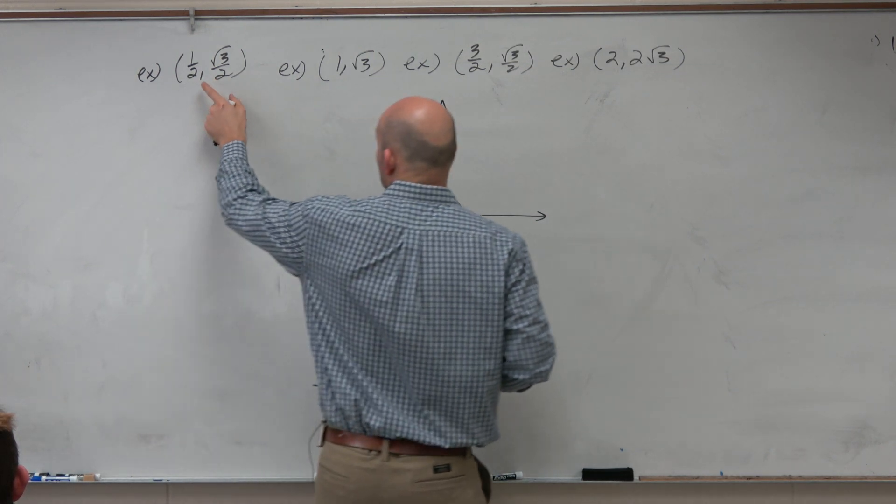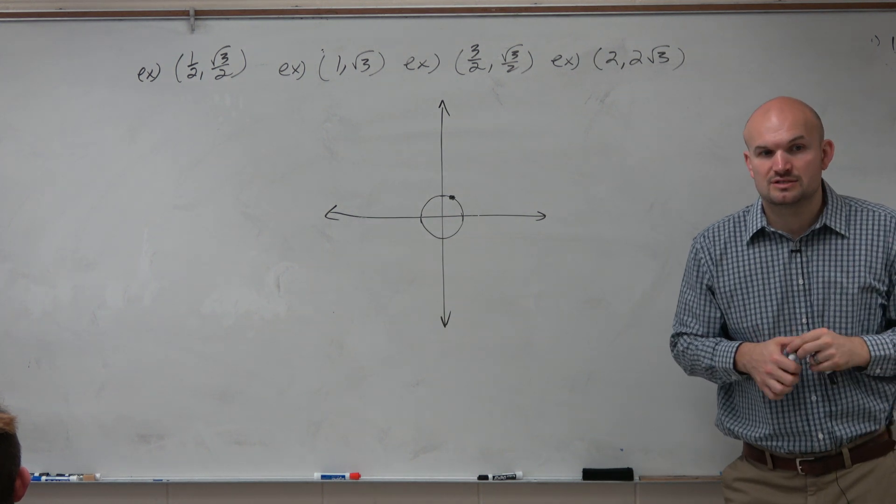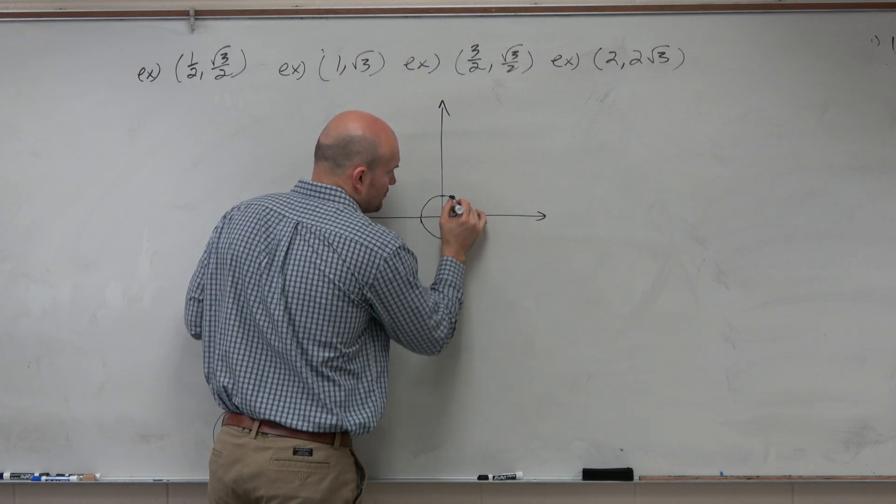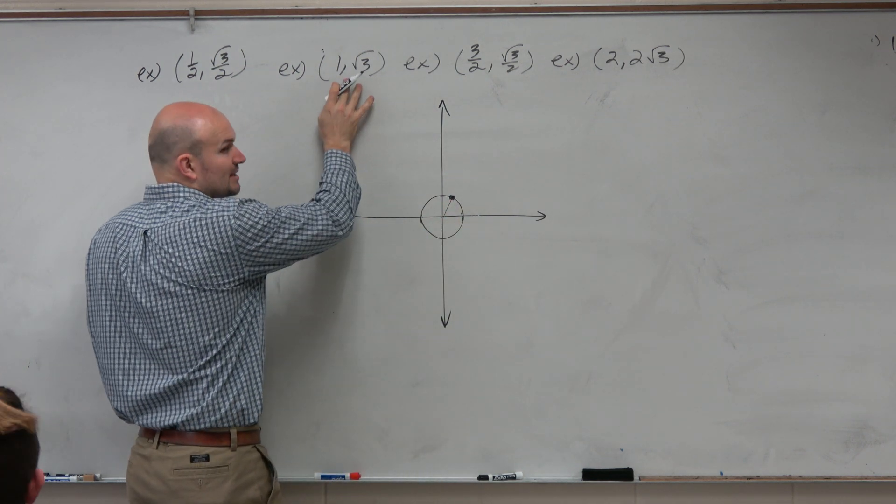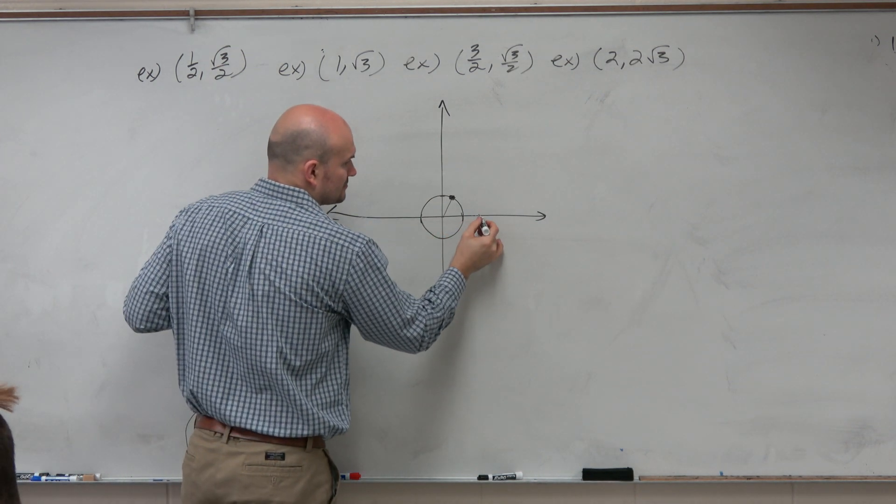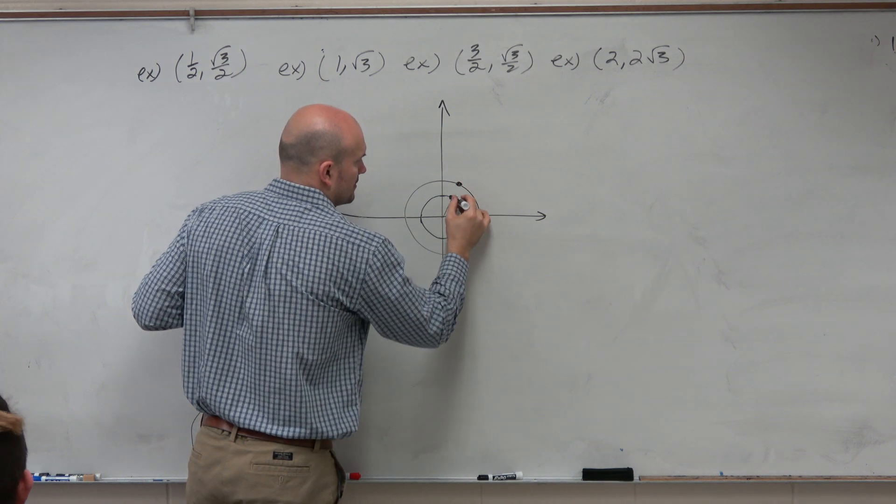So then we look, is there a relationship here between this and this? Yeah, it's just twice as long. So again, think about this: if the distance from here to here is 1, what do you think the distance from here to the origin is? 2.